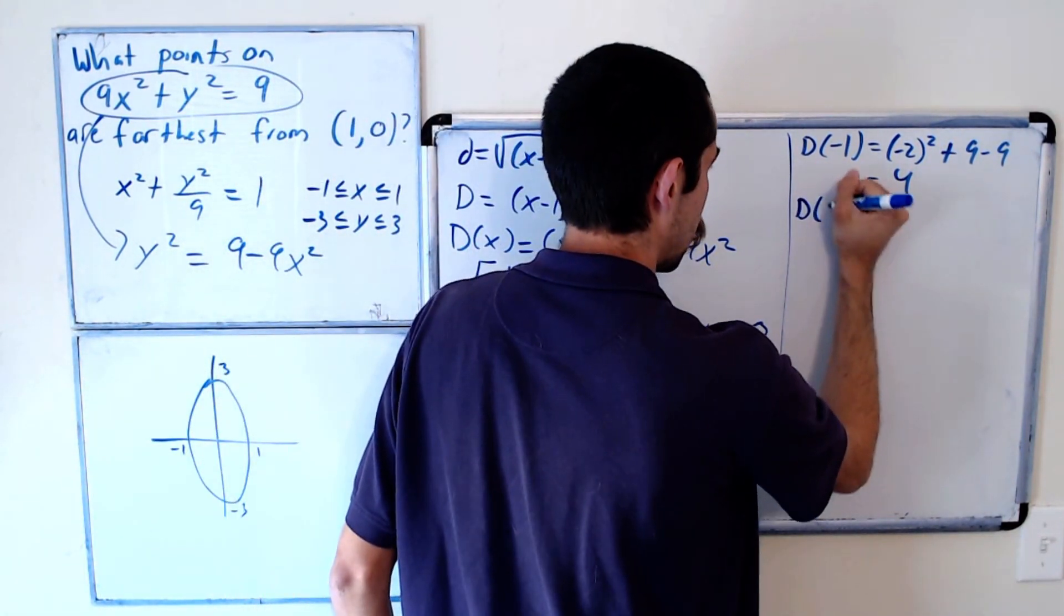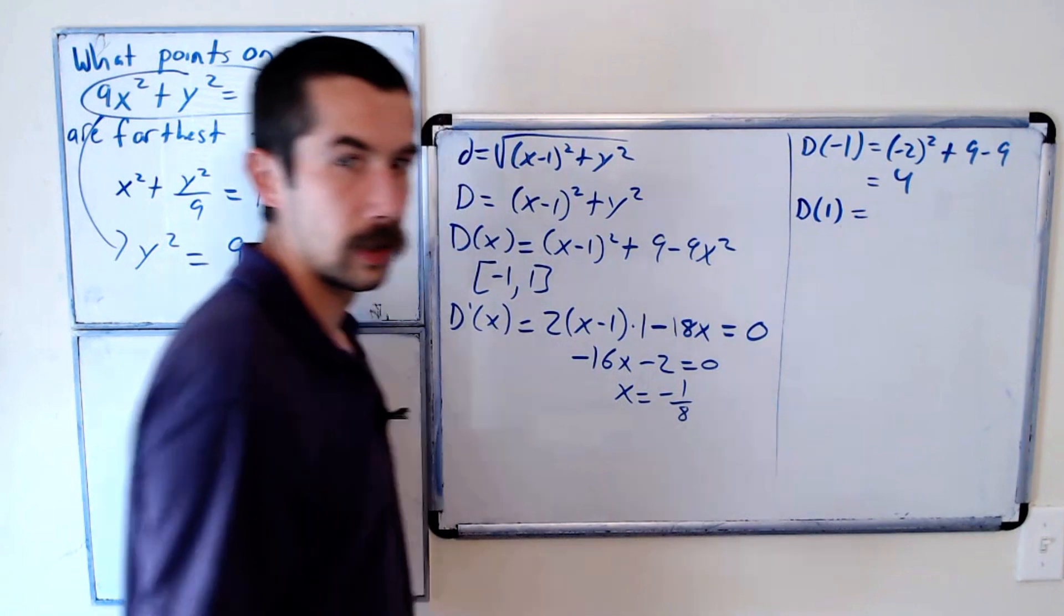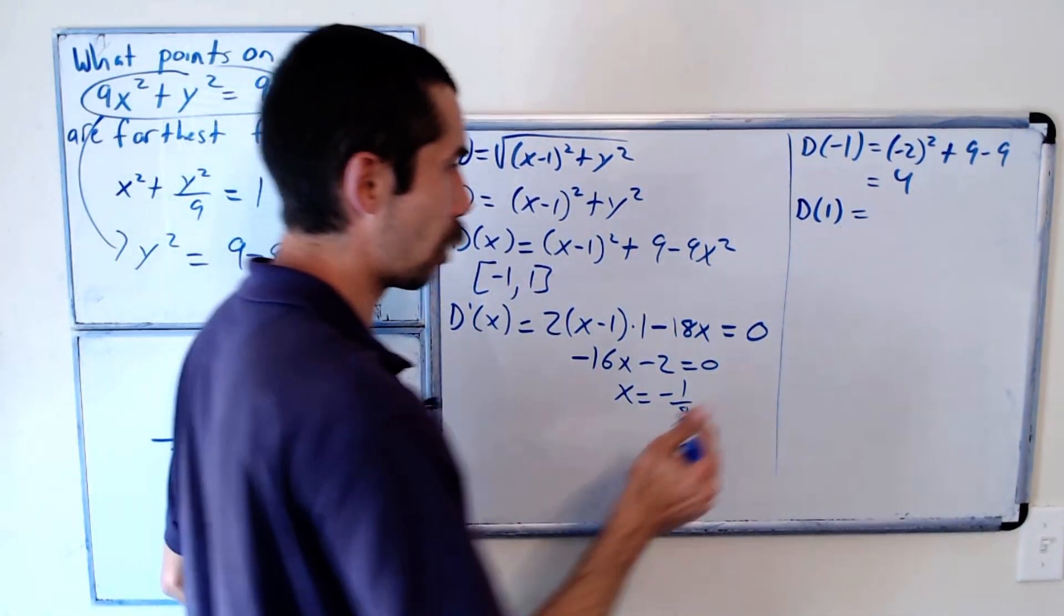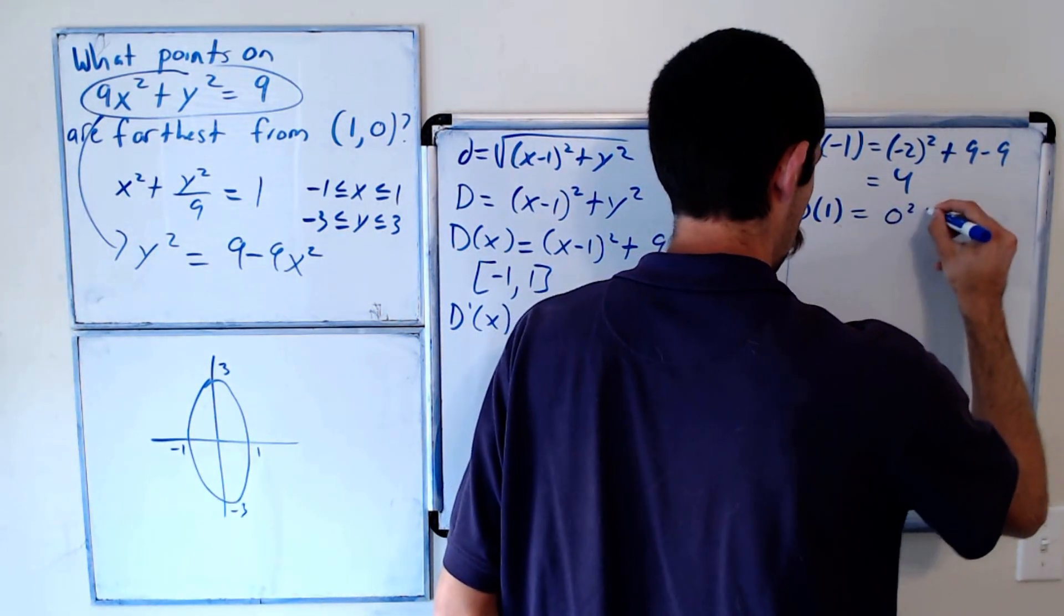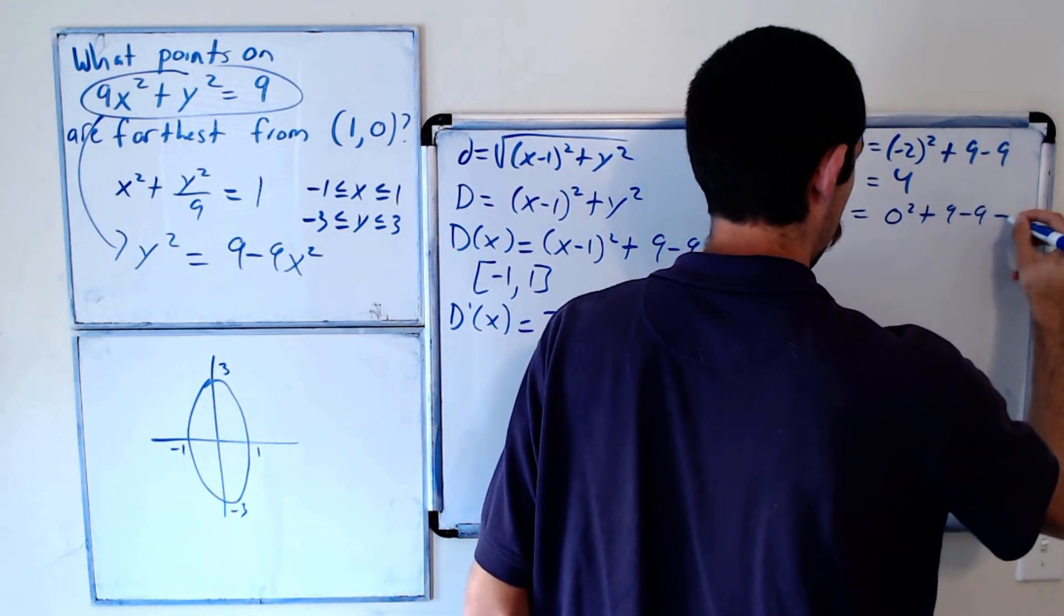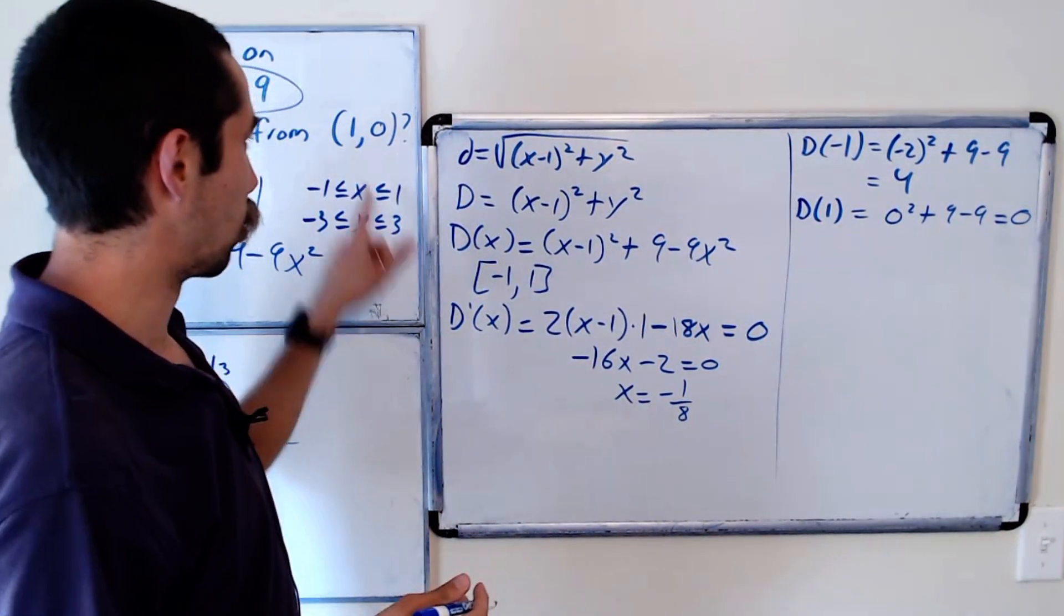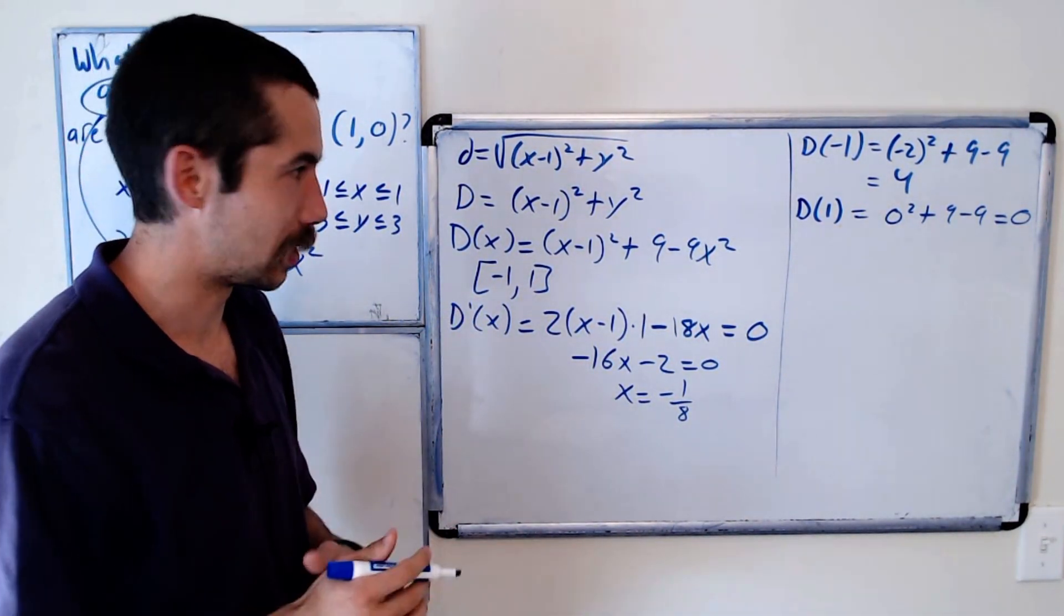Try the other endpoint. Evaluating at 1, we plug in 1, we get 0 squared plus 9 minus 9, which is 0. So the point with an x value of 1 is distance 0 away from the point (1, 0). That shouldn't surprise us.